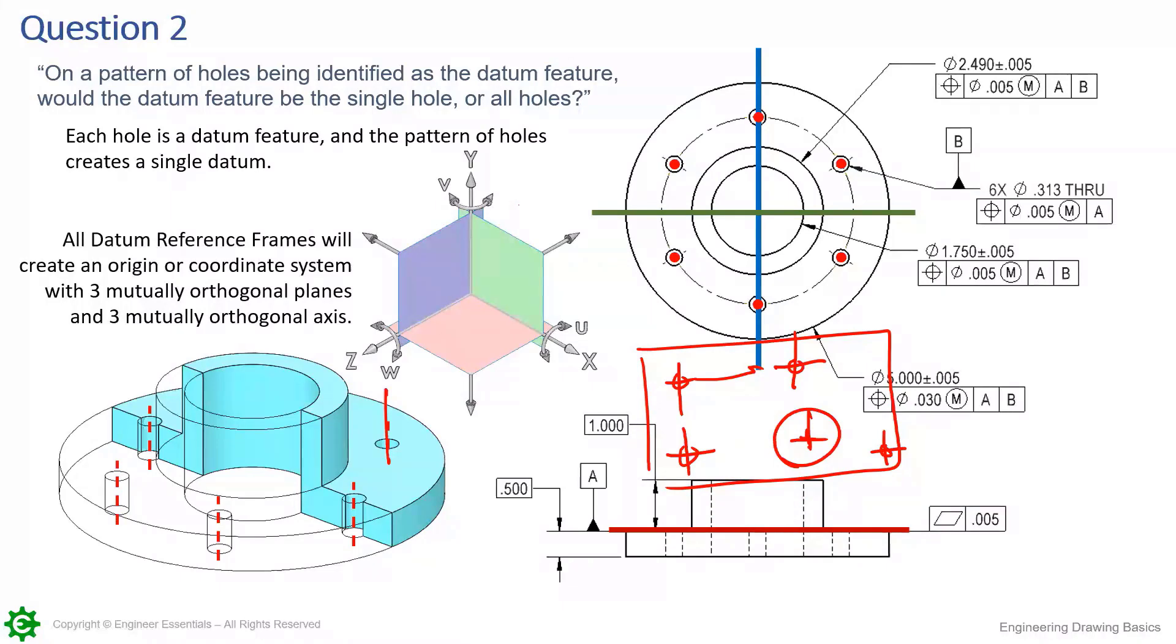Again, the pattern of holes is very common to use as a datum feature that then creates the datum. The datum here is either going to be two planes or a plane and an axis. It's easy to picture the axis, the center axis of those features, and then a plane symmetrically about it. Any questions about this? Again, for me it's easiest to picture the functional gauge that would get used in this scenario to picture how it's controlling the datum reference frame.